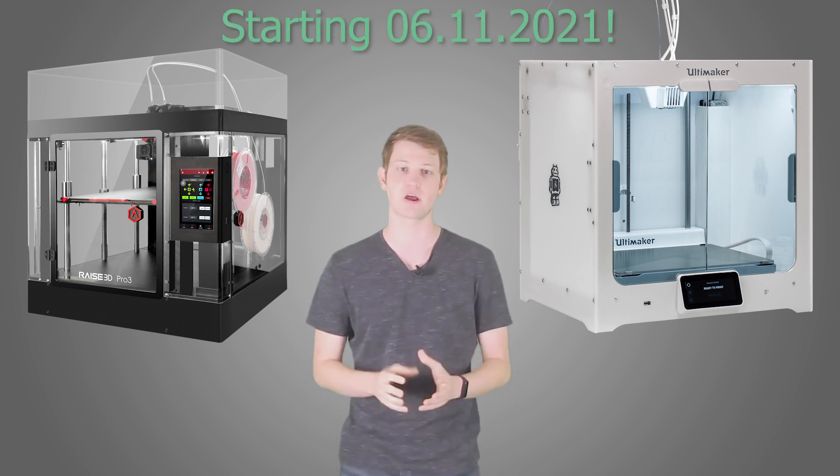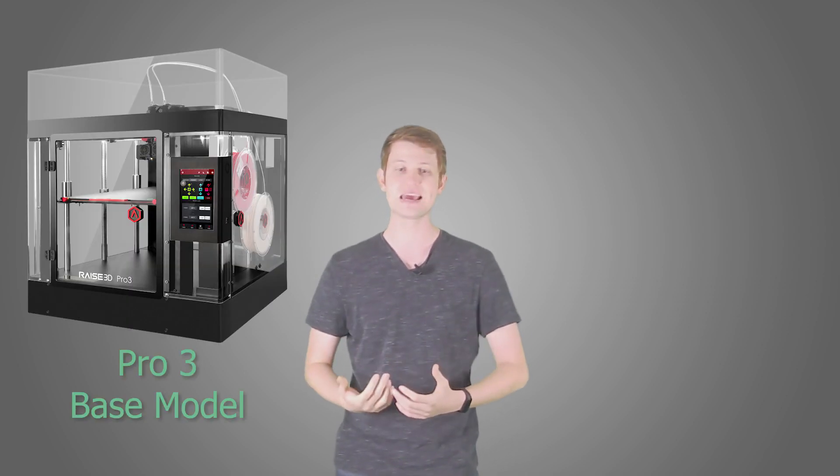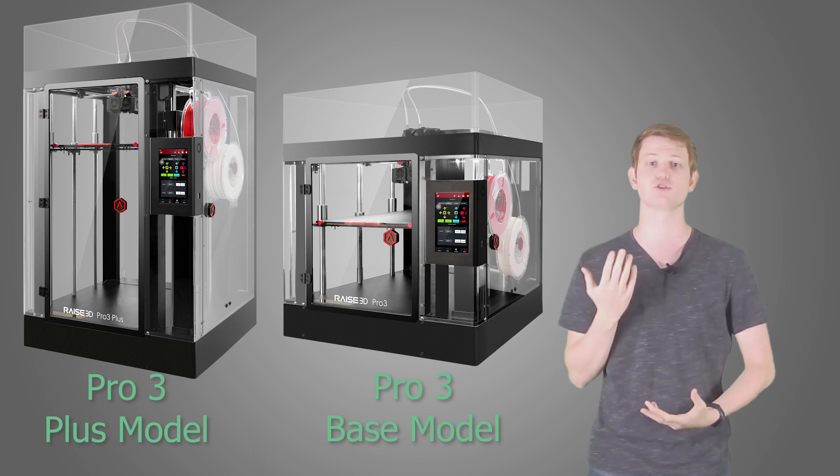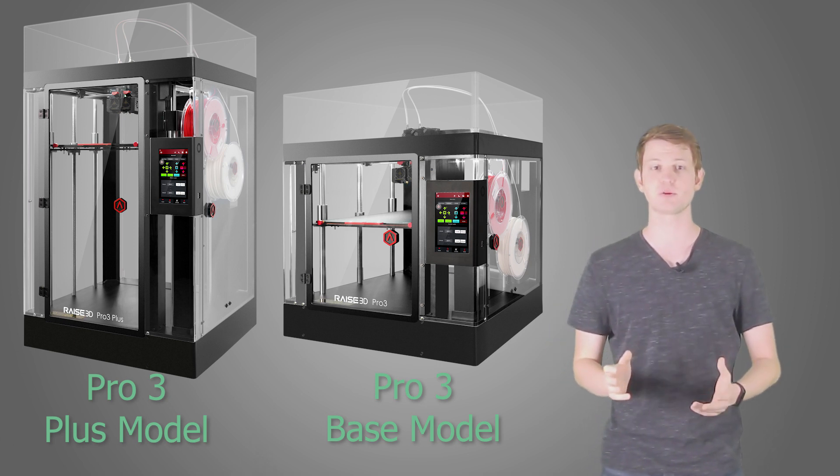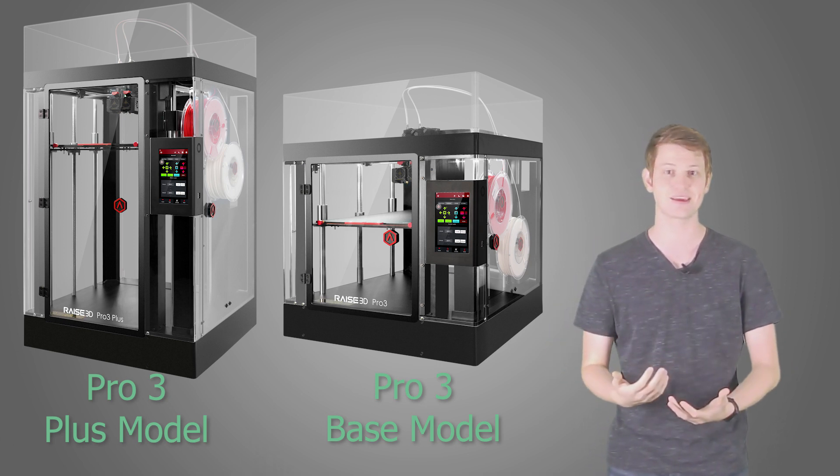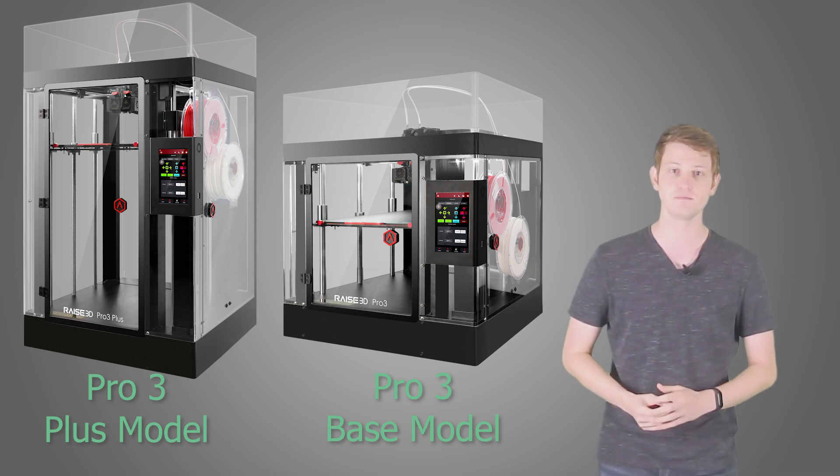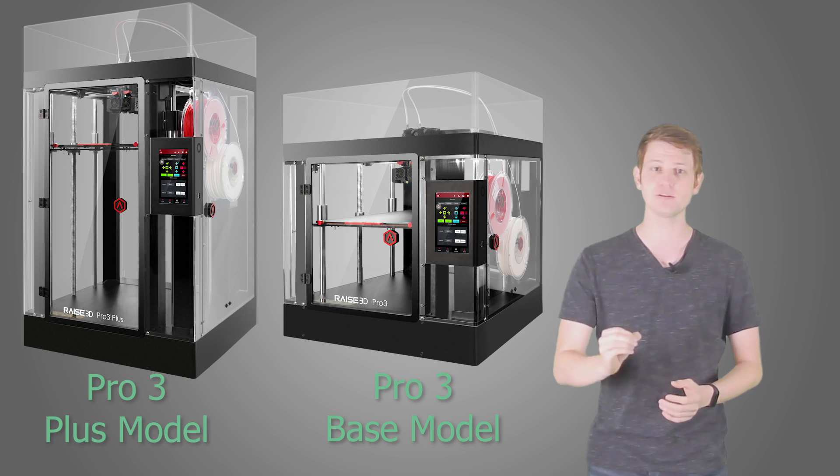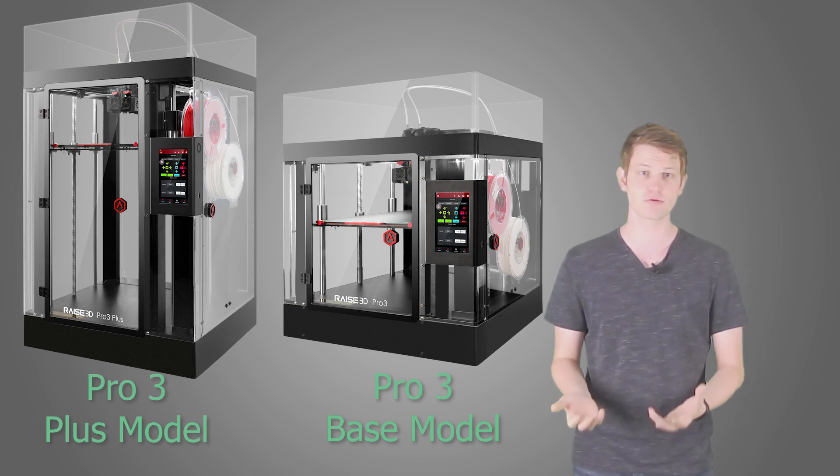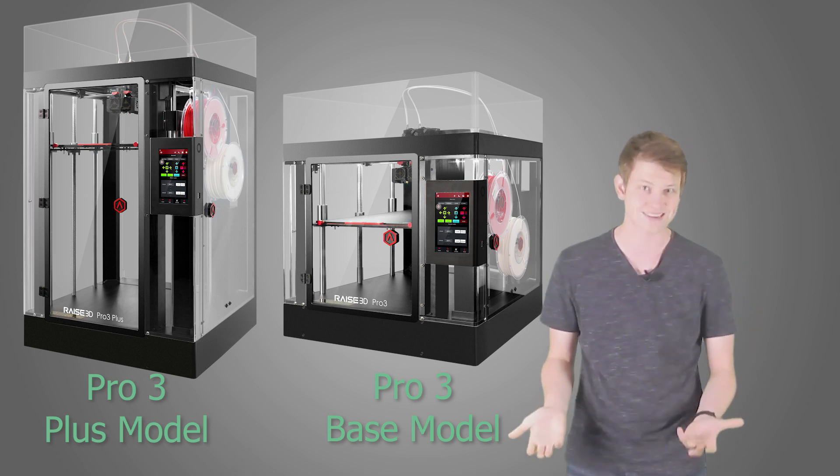The Pro 3 series itself consists of two models, the regular Pro 3 and its big brother, the Plus version. Really, the only difference between these two machines is the z-height they can print, with the Plus version doubling the height of the base model. So aside from when I look at the build volume or the prices, I will treat the two Pro 3 printers as pretty much identical.